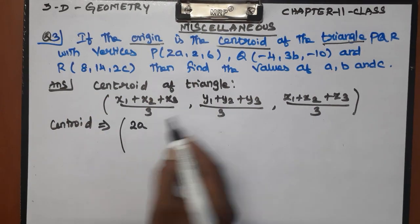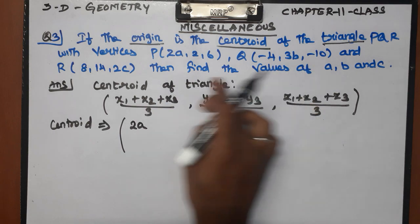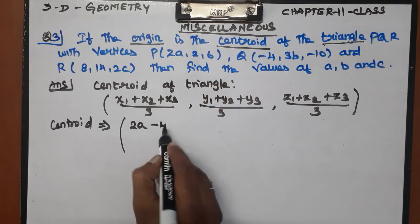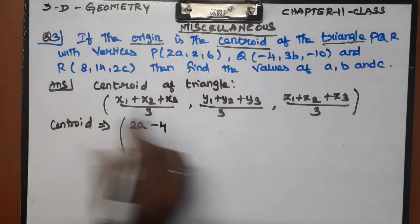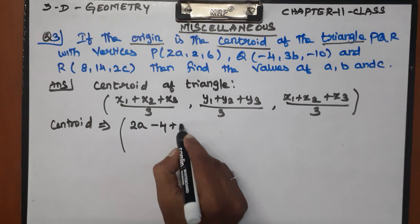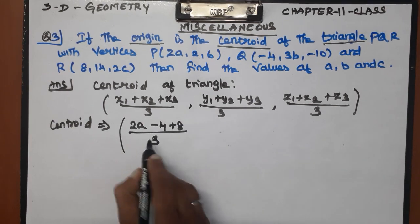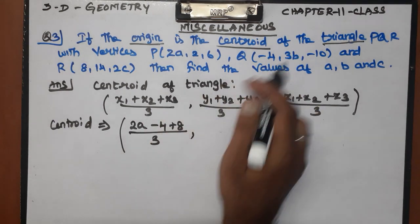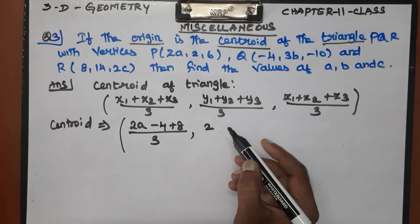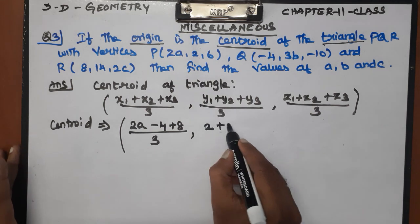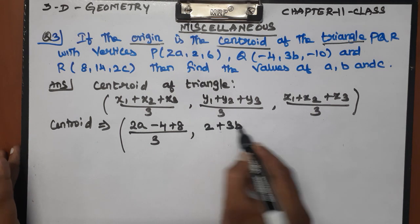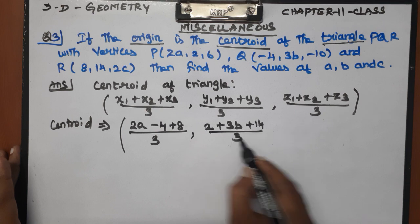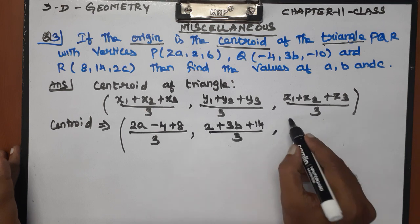So x1 is 2a. Next, x2 is minus 4, x3 is plus 8, divided by 3. Next, y1 is 2 plus 3b plus 14, divided by 3.